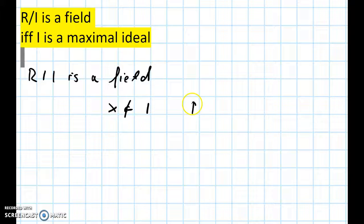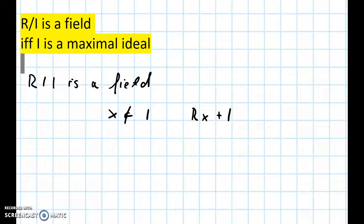And look at the following ideal Rx plus I. This is an ideal, and since R over I is a field, this is an ideal that contains 1 plus I because we can find an inverse for x.